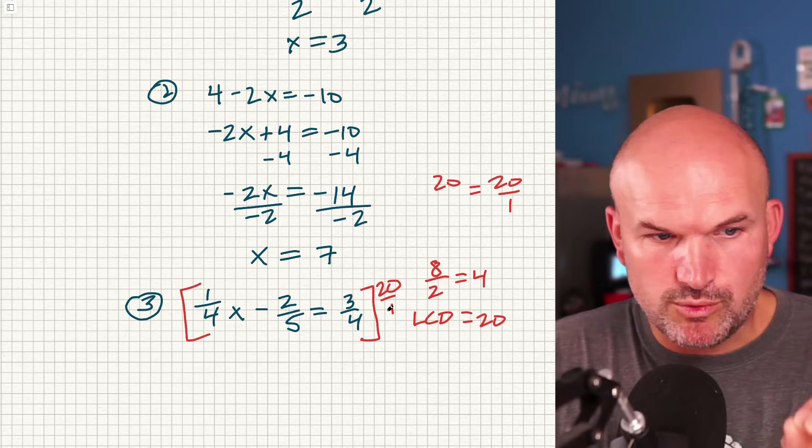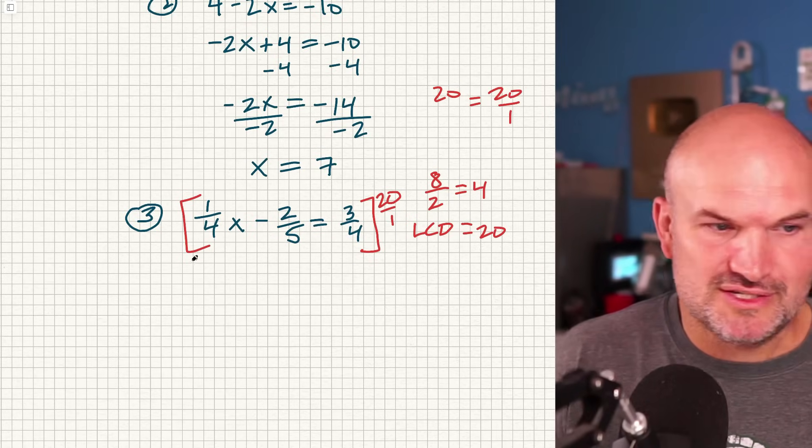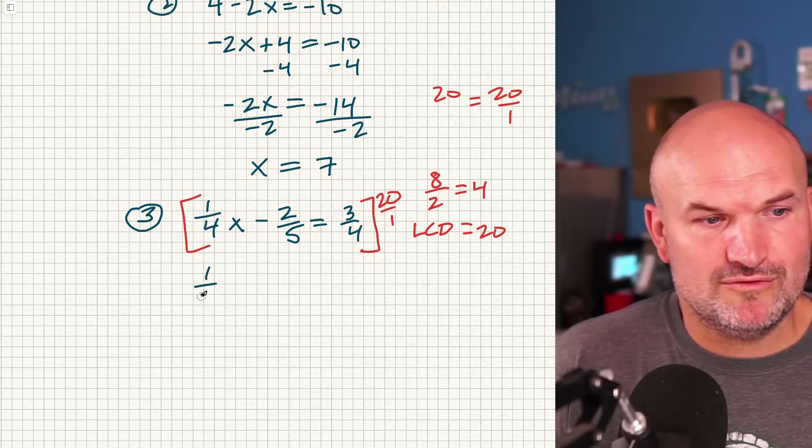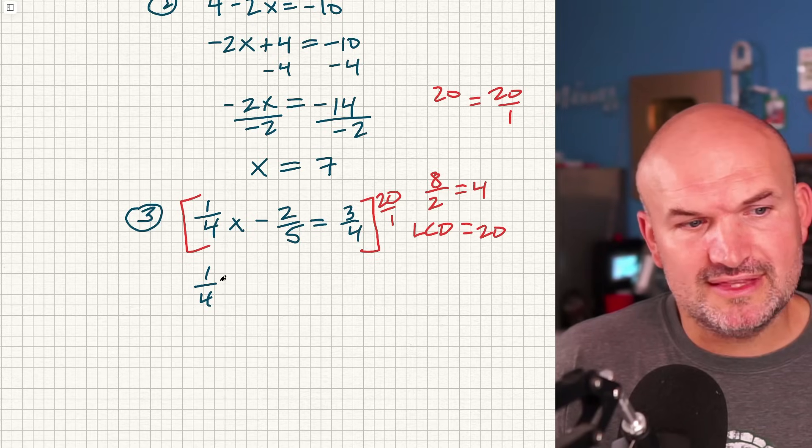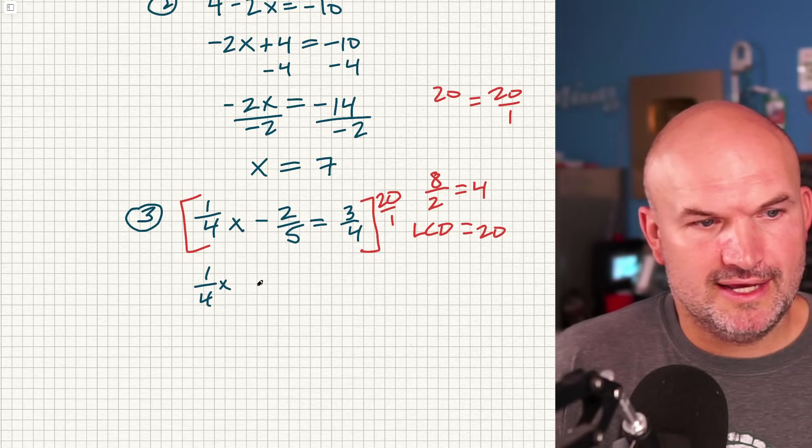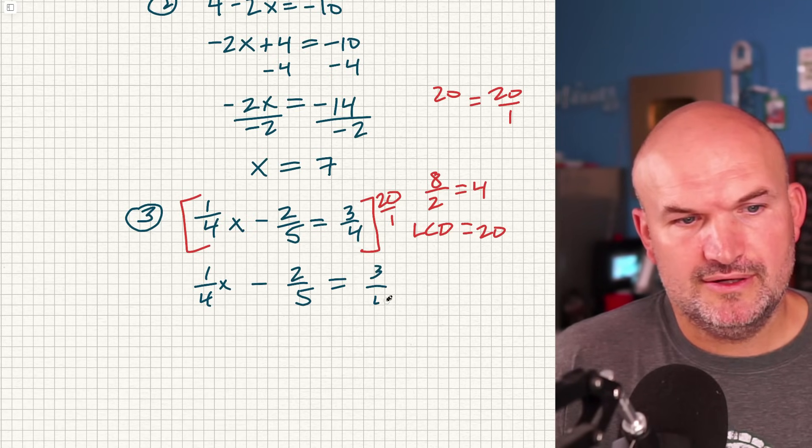So when I'm multiplying a 20/1 times all these fractions, this is what I'm going to get. I'm spending a lot of time on the fractions. But again, it's something where a lot of students just make their mistakes. So I have (1/4)x and then a minus a 2/5 is equal to a 3/4.